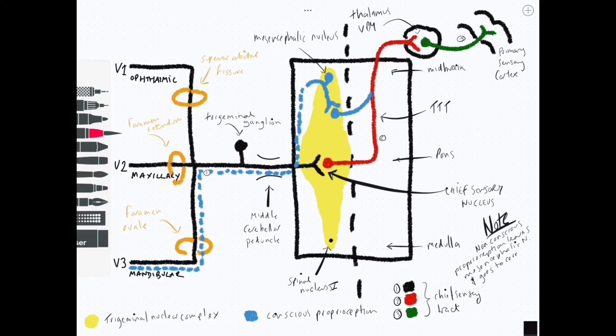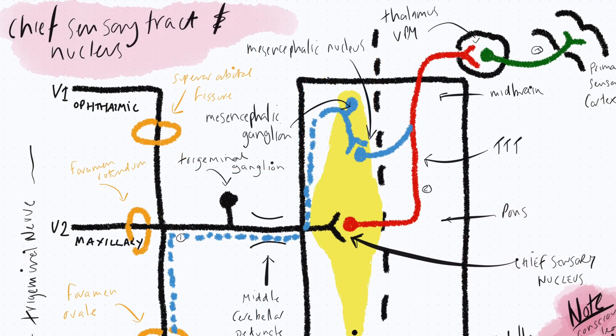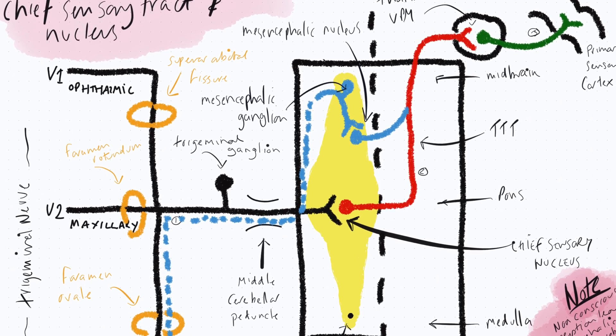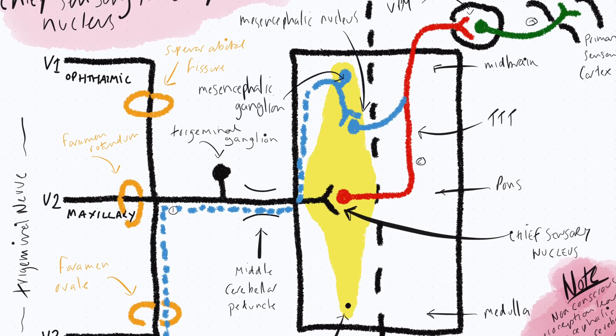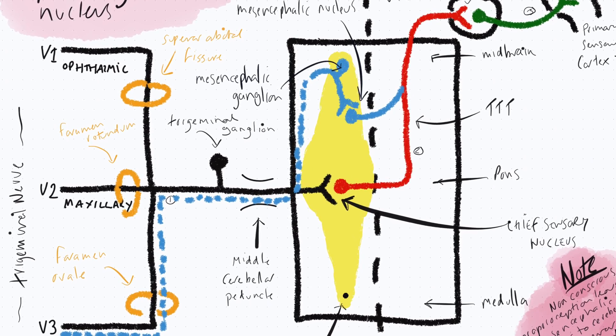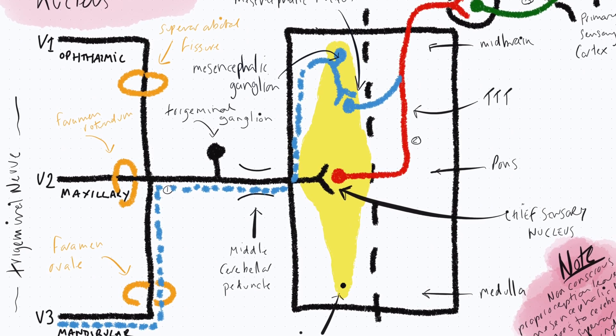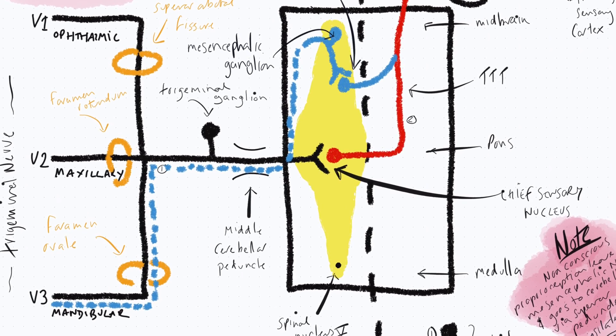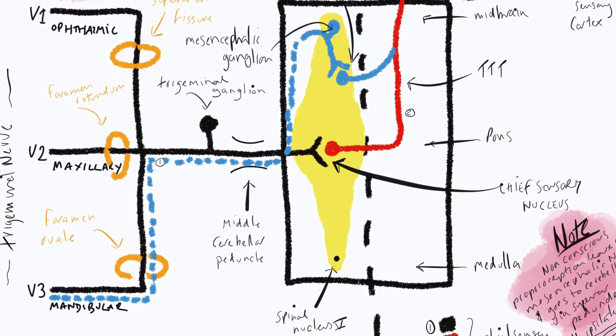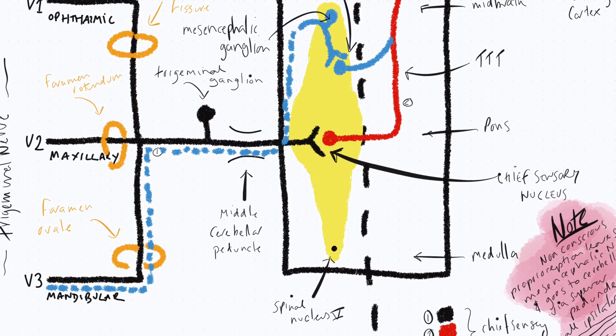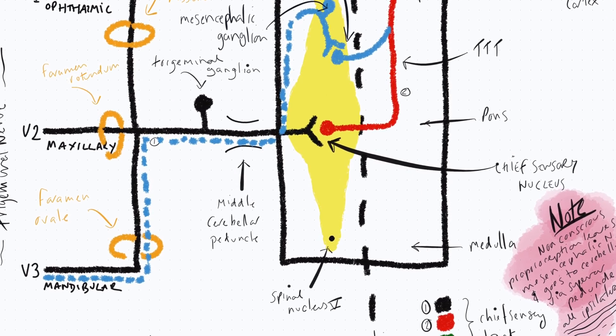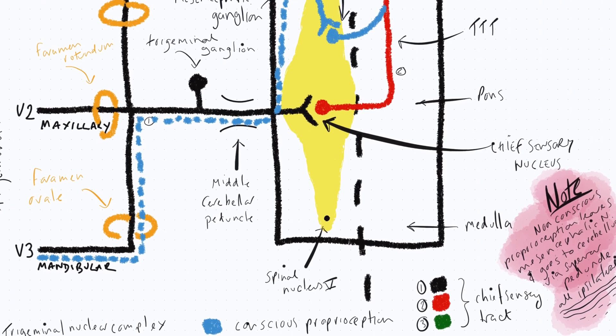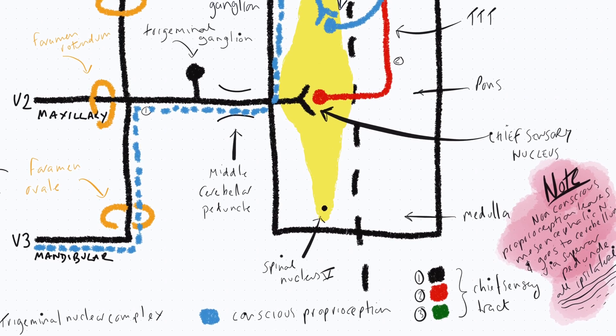Now we can talk about lesions. If we have a lesion of the TTT, remember now we know that all sensory information travels in the TTT: pain and temperature via spinal tract and nucleus 5, and via the chief sensory tract and chief nucleus 5, we have discriminatory touch, conscious proprioception, and vibration. Depending on where the TTT is lesioned, we could either lose some or all of that sensory information, and that would be contralateral loss. If we had a lesion in the third-order neuron, that would lead to contralateral loss as well. Anything going on in the trigeminal nerve itself leads to ipsilateral loss of sensory information.